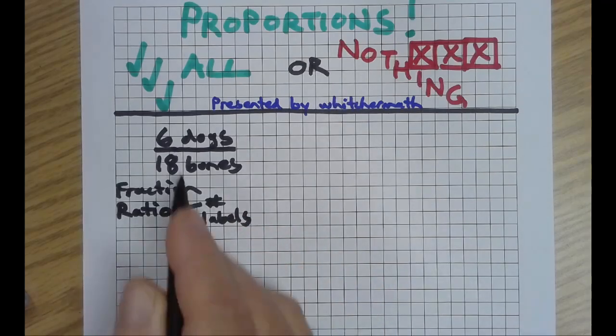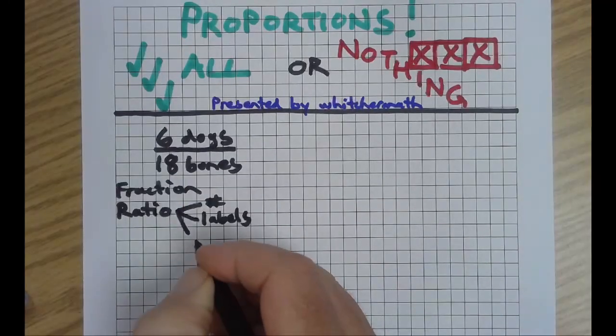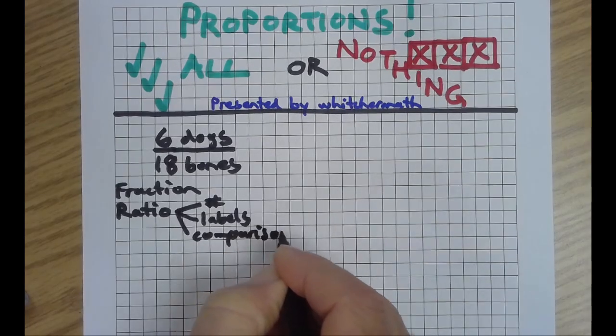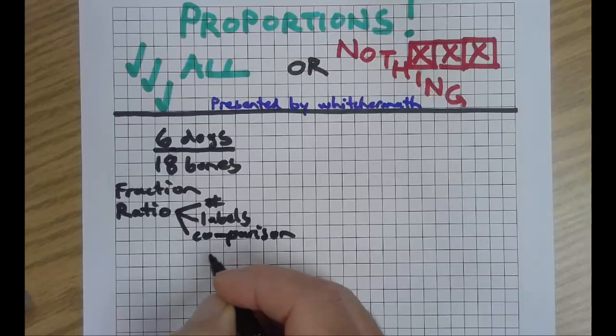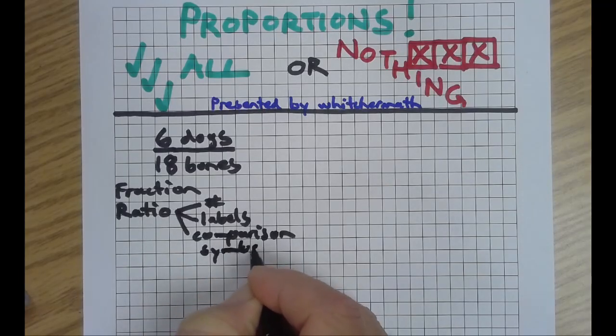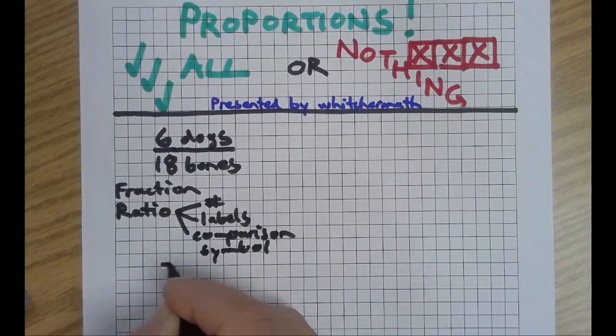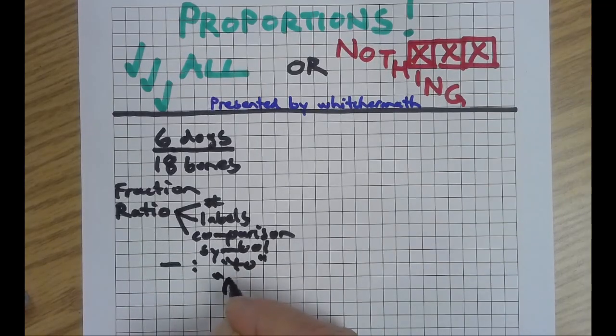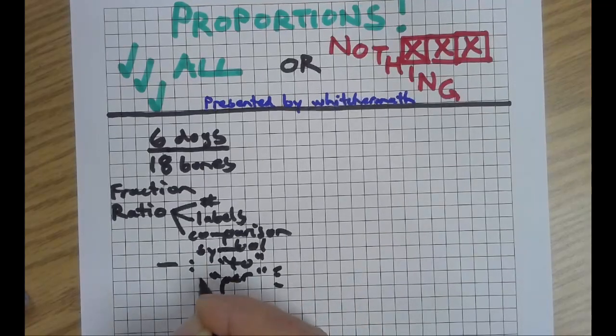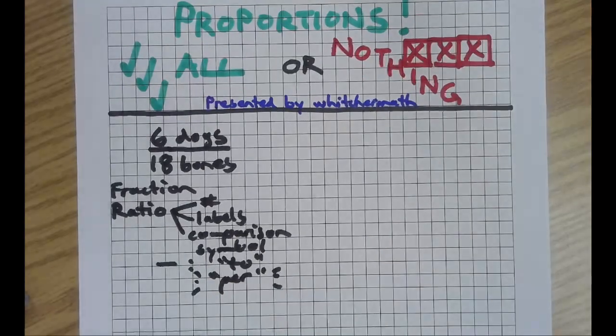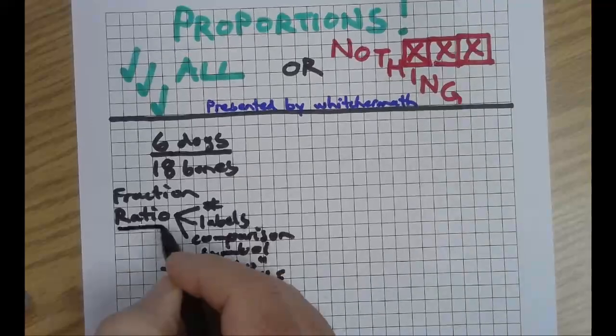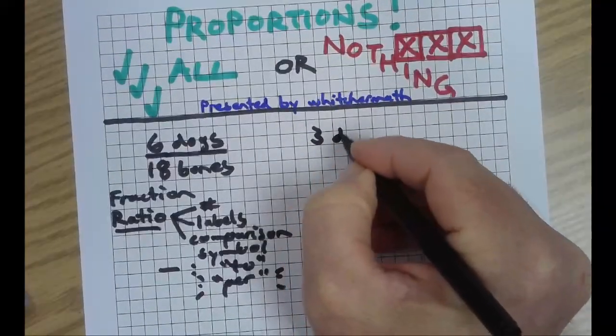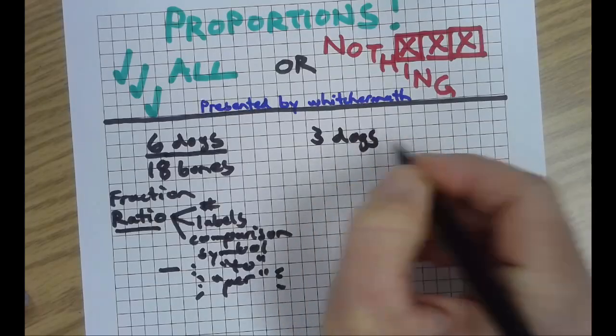So, to have a ratio, we need a fraction, and we need more stuff. It's got a comparison symbol, which, as we've already learned, could be a fraction bar, could be a colon, could be a word, like two, or per. So, that's a ratio. Boom. Wait for it.